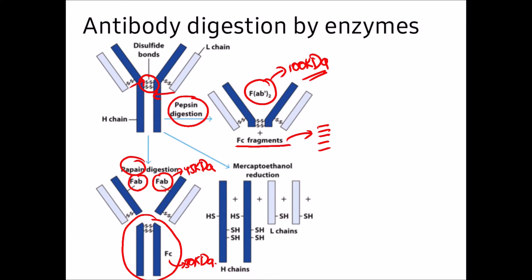When you treat an antibody with mercaptoethanol, it reduces the disulfide bonds so that the light chain and heavy chain dissociate from each other. You recover two light chains and two heavy chains. The molecular weight of each light chain is approximately 25 kDa and each heavy chain is 50 kDa.